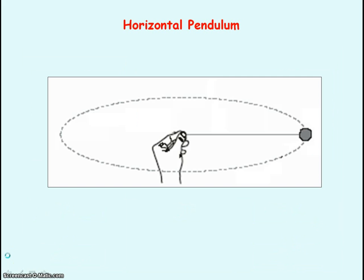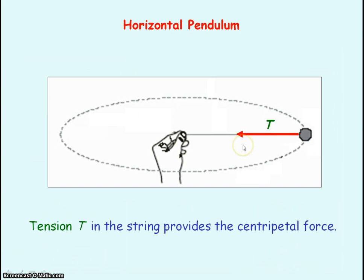For an object that is forming a horizontal pendulum, it is the tension in the string that is providing the centripetal force. The weight of the object, which acts vertically downwards, does not contribute to the centripetal force.